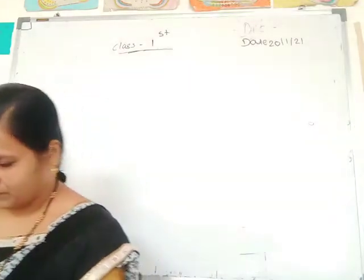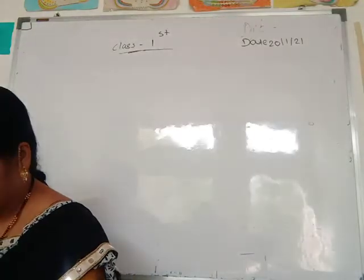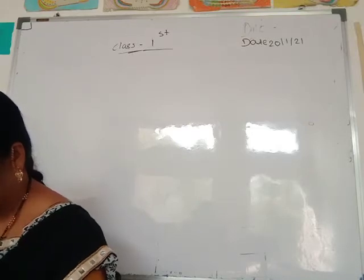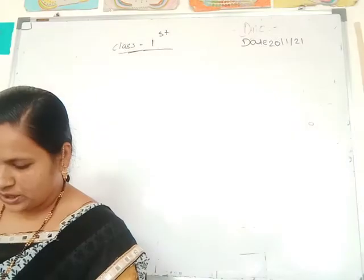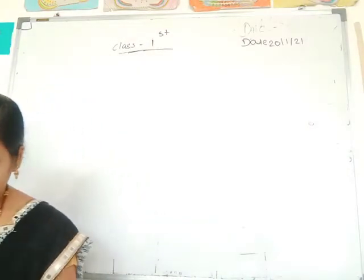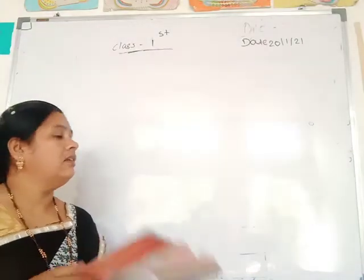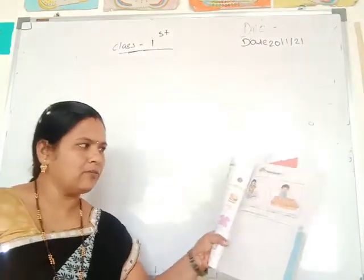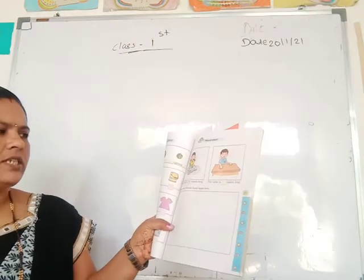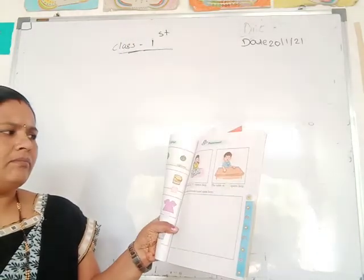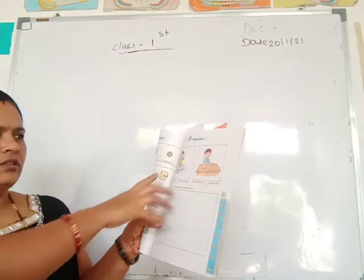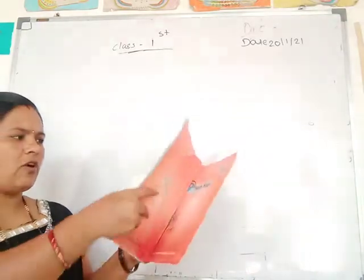Good morning students. In this Math Magic book, we started Chapter 7.1 Measurement. See this chapter — measurement. The book is 3 spans long. By using these spans, she measured this book and this book is 3 spans long.